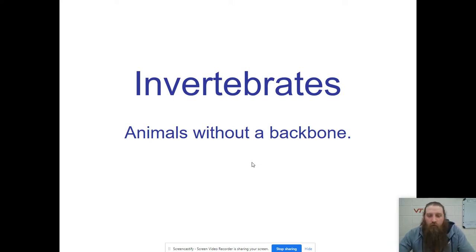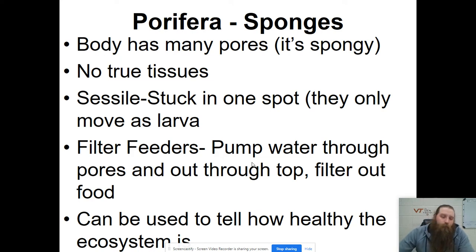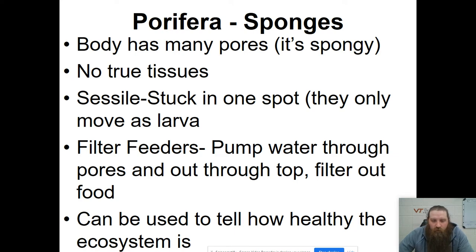An invertebrate is an animal that does not have a backbone. We're basically going to take each phyla and look at the main characteristics of that phyla and look at some examples.